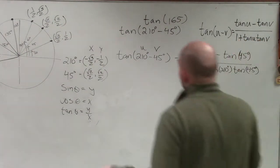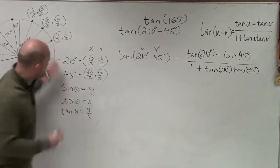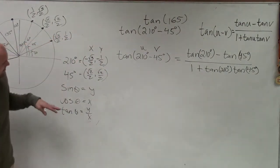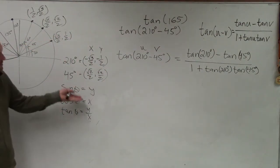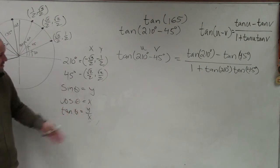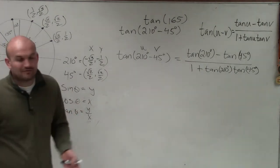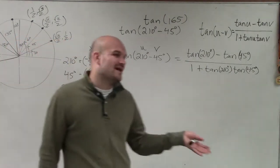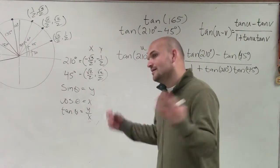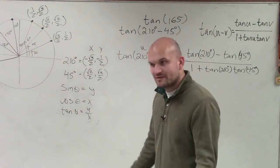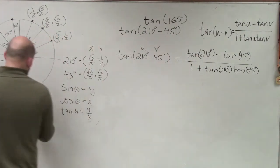Now we need to evaluate tangent of 210. For sine and cosine formulas, sine represented the y-coordinate and cosine represented the x-coordinate. But tangent becomes a little more difficult because now you have to do the y-coordinate over the x-coordinate. It's just a little bit of extra work, so let's do that.